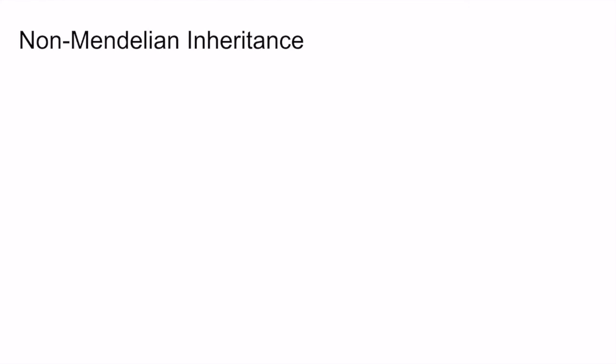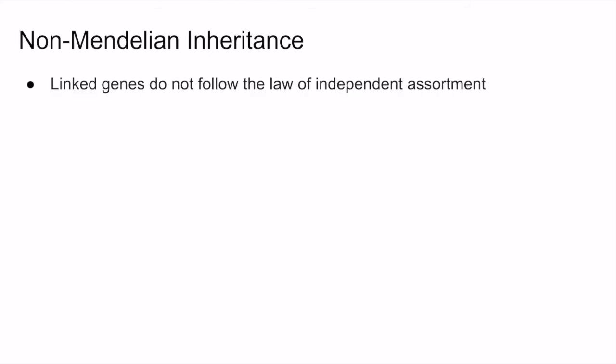I just wanted to go over some important cases of non-Mendelian inheritance. First, linked genes do not follow the law of independent assortment. The law of independent assortment only applies to genes that are located on different chromosomes or are located very far apart on the same chromosome. It just so happened that all of the characteristics Mendel chose were controlled by genes on different chromosomes or far apart on the same chromosome, which meant they segregated independently. However, for genes located near each other on the same chromosome, their alleles tend to be inherited together and do not assort independently.